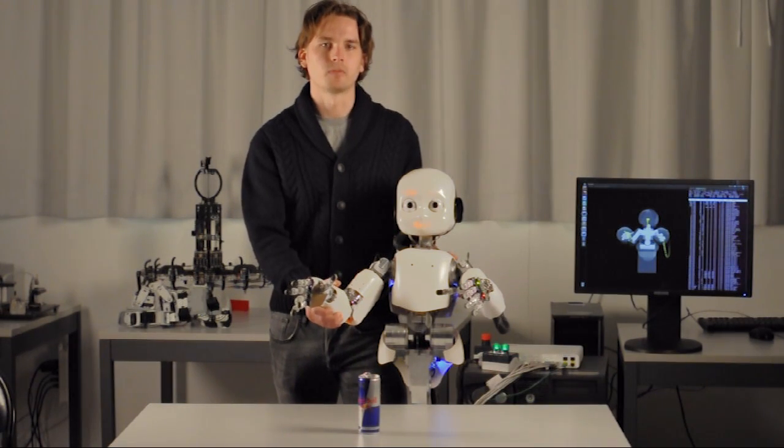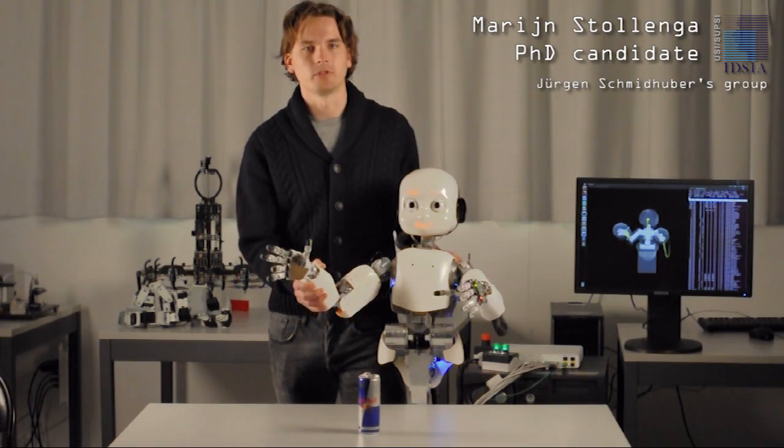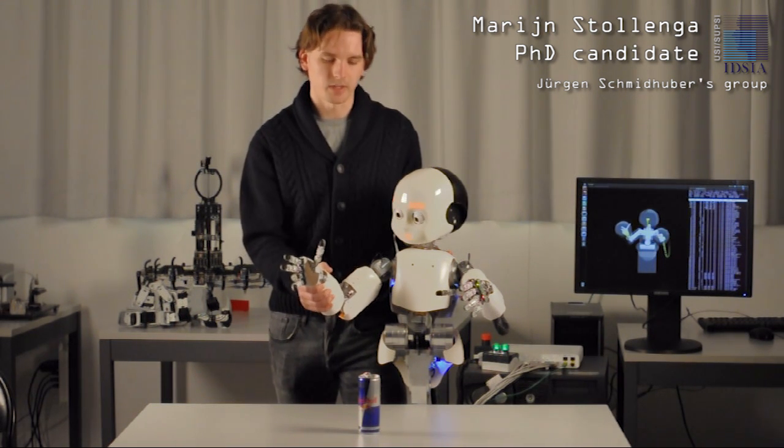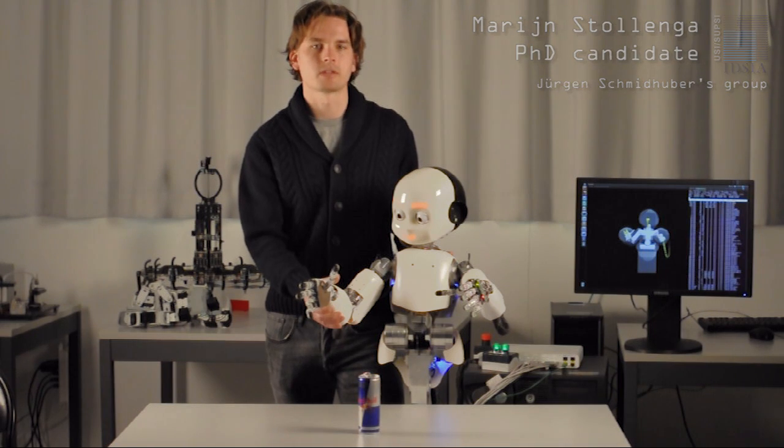This is iCub, a humanoid robot. It is mechanically similar to humans so it seems easy to make it move like us. However, simple movements like picking up a can require very complex joint movements.